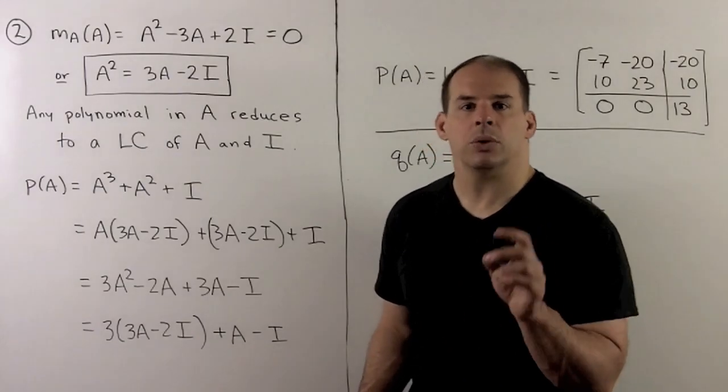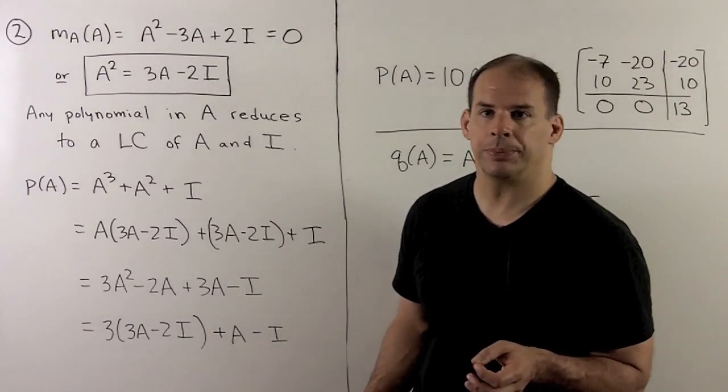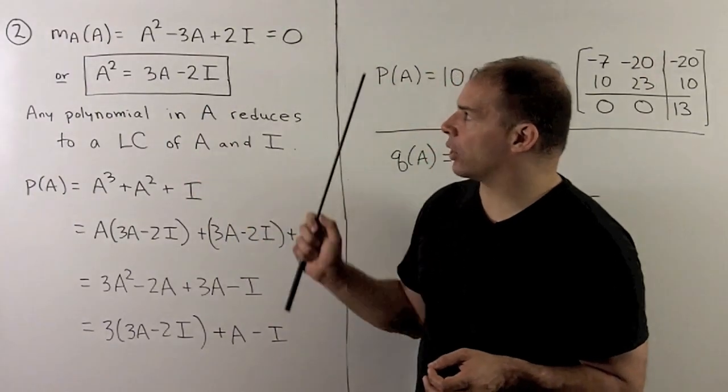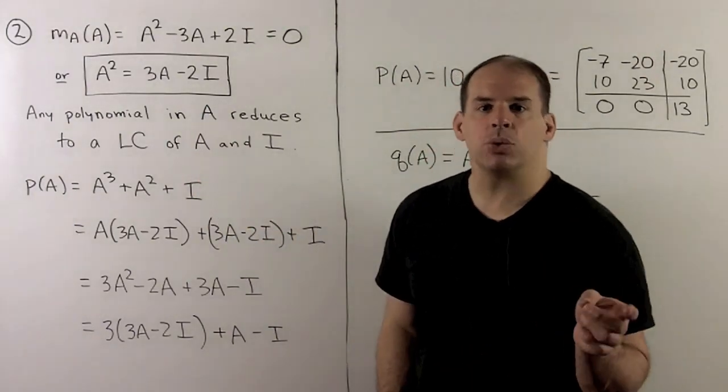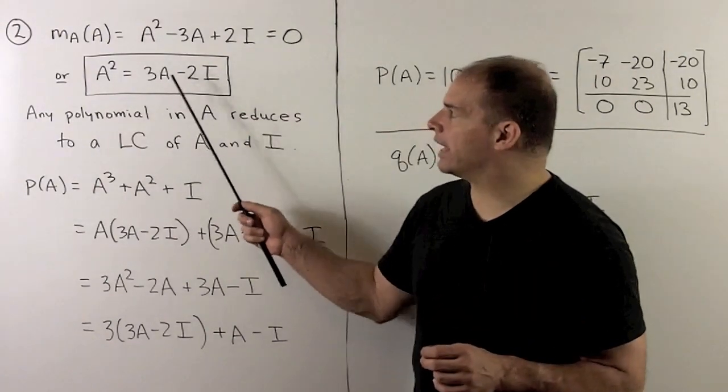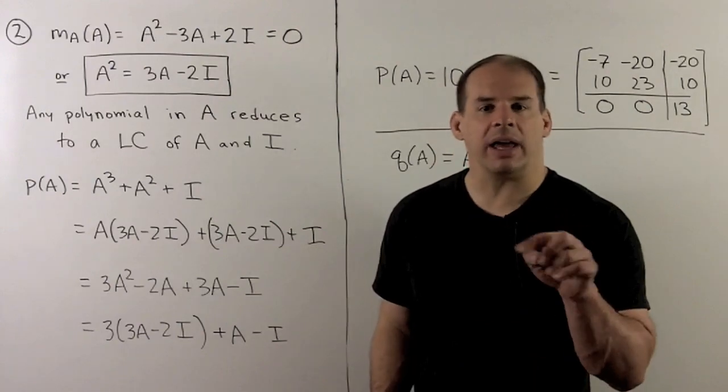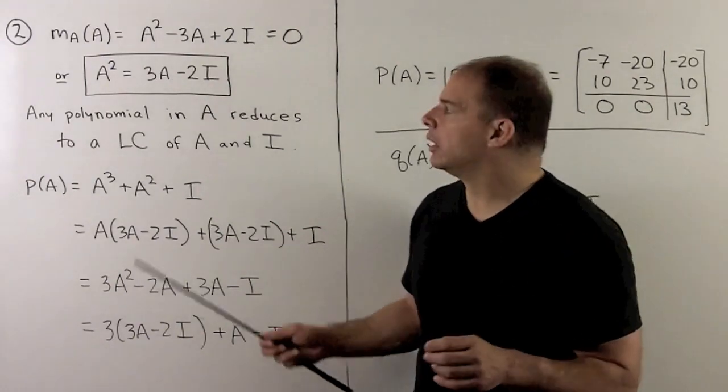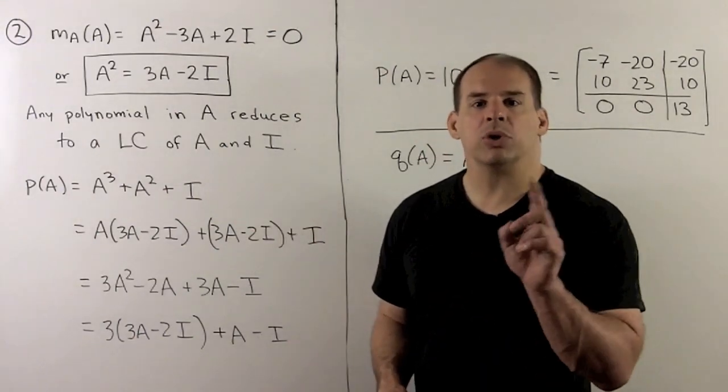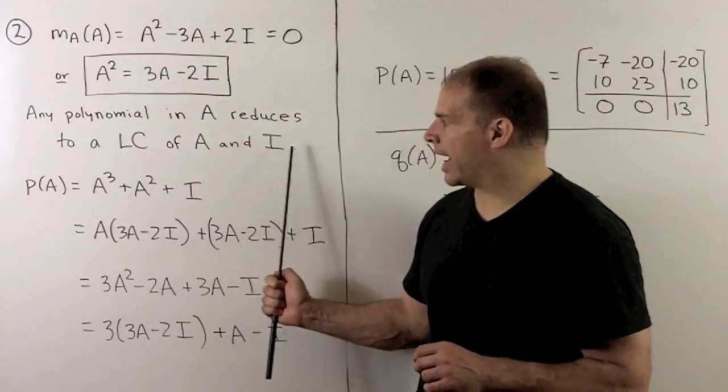For the next step, we use the minimal polynomial to simplify our computations. We just solved the minimal polynomial on A. So we have A squared minus 3A plus 2I equals zero, or A squared equals 3A minus 2I. If we evaluate any polynomial on A and repeatedly substitute out the A squared, we're going to be able to reduce the evaluation of that polynomial to some linear combination of A and I.